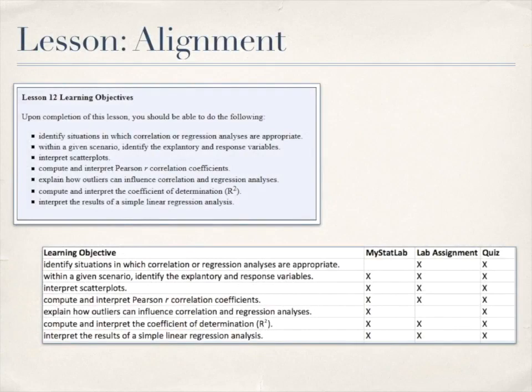To show you what my alignment documents typically look like, I just take a list of the learning objectives and sometimes if there are objectives that cover multiple topics I split them up into multiple lines and I check off whether or not they appear in the MyStatLab assignment, lab assignment, and quiz. Here we can see that each learning objective appears in at least the MyStatLab or lab assignment. Most appear in both and all learning objectives are covered in the lesson quiz. Again I do this to make sure that students are able to practice each task before being asked to do it in the quiz. There should be no surprises at the end of the lesson when students sit down to take the lesson quiz.